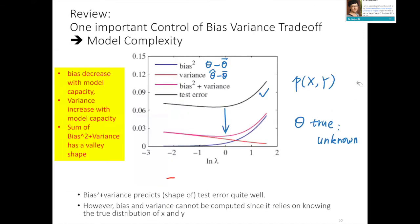Cross-validation error is a very good approximation for bias-squared plus variance. In real-world data, you actually cannot plot out the true bias-squared plus variance because you don't know theta-truth or f(x)-truth. So we use cross-validation to approximate that curve. Using model complexity, this type of curve is called a validation curve, and it's used to control the bias-variance trade-off.